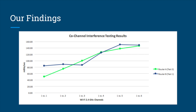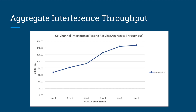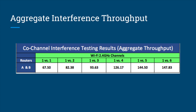As we continued our testing, the throughput to each of the clients decreased. When the channels were on 1 and 3, the clients received throughput of 86 Mbps and 100 Mbps respectively. When both routers were on channel 1, the throughputs were 15 Mbps for the variable router and 84 Mbps for the control router.